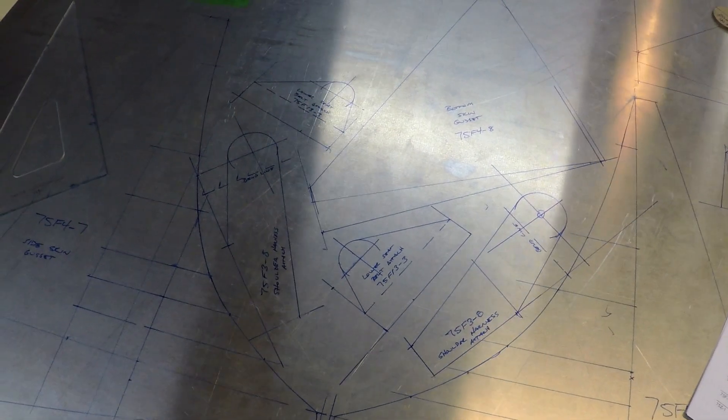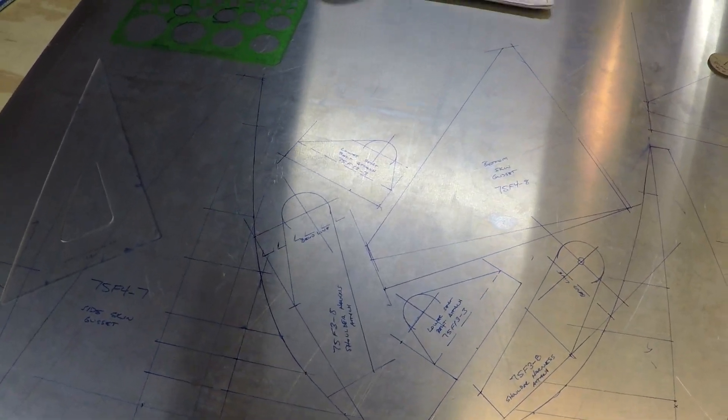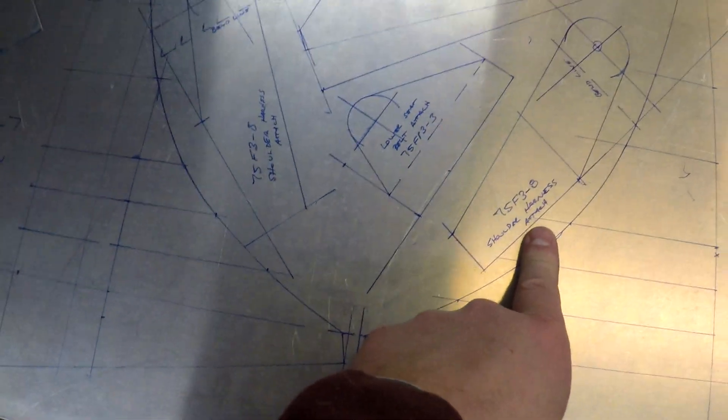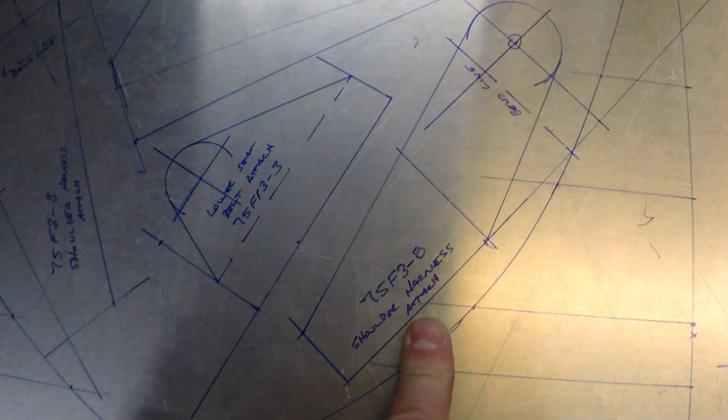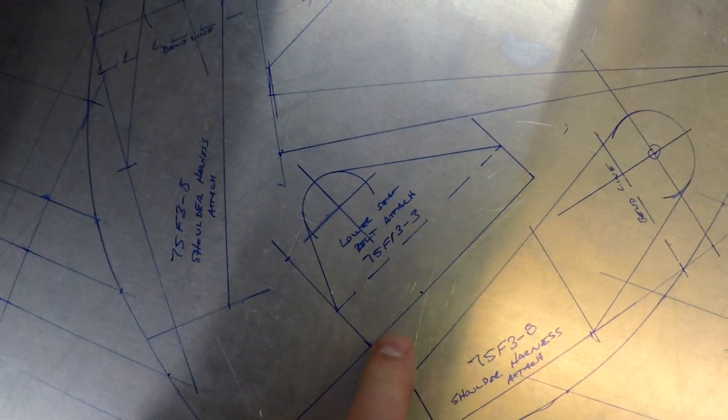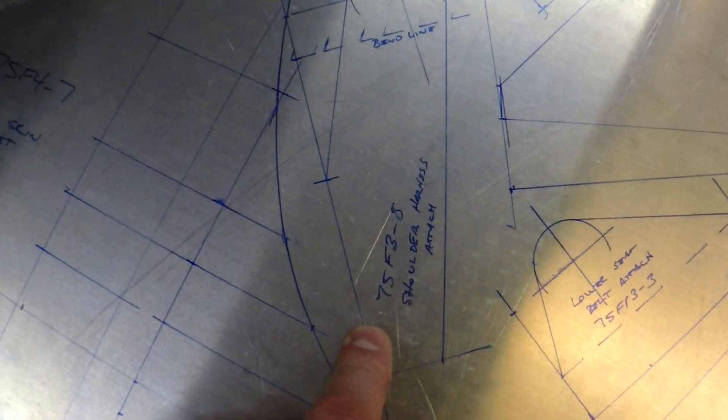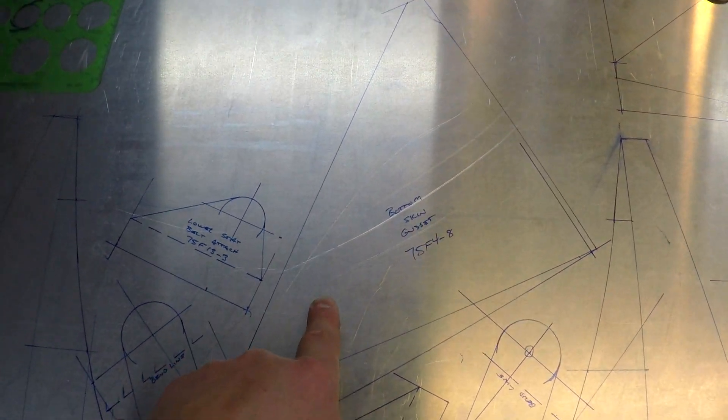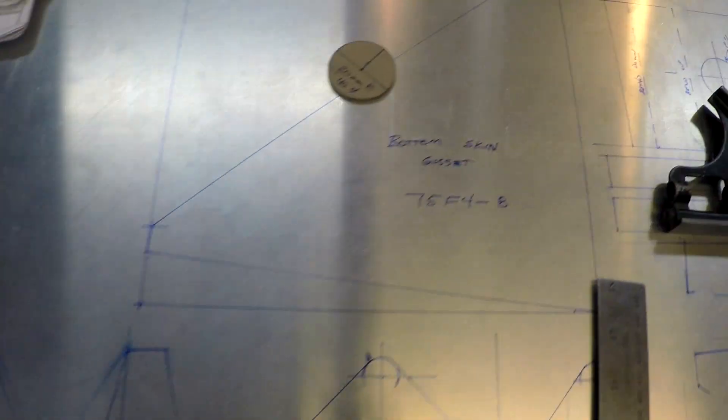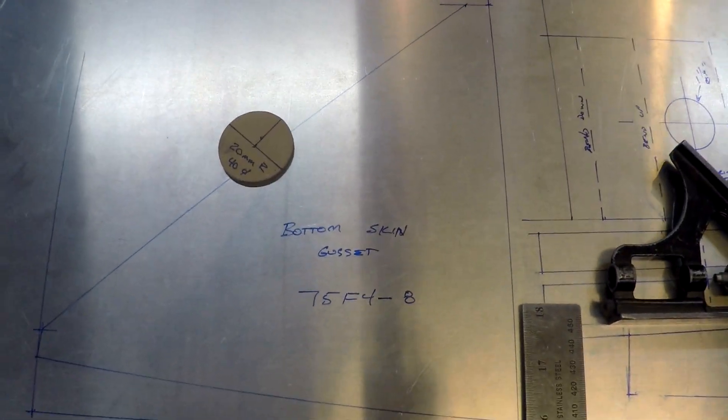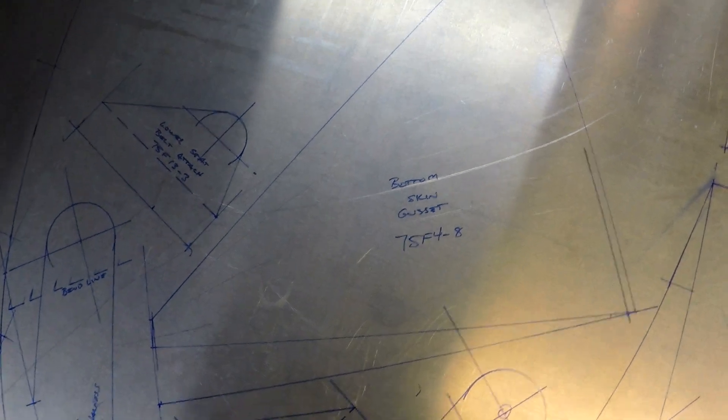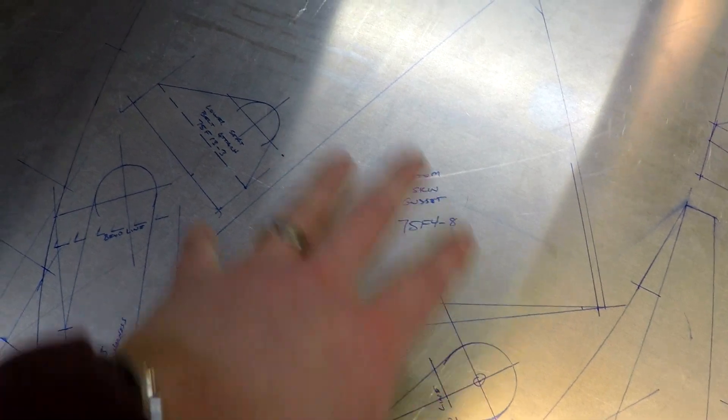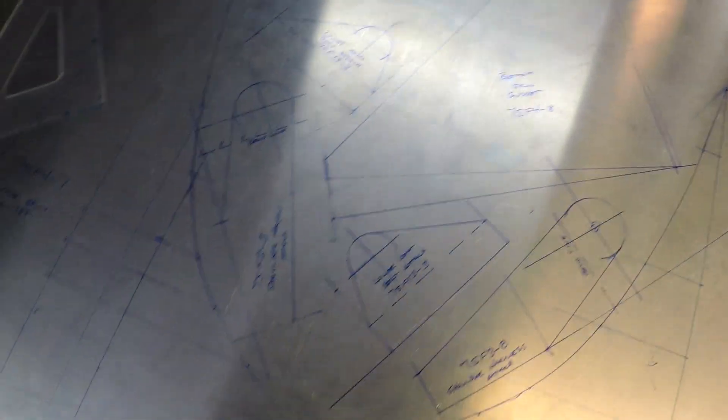Alright, so I wanted to give you just a quick final look at these kind of randomly located parts here. So we talked about the one shoulder harness attach point that just kind of randomly fell into there. I did the same thing with the lower seat belt attach, the other shoulder harness attach, the other lower seat belt attach, and one of the bottom skin gussets. So that's kind of a mirror, or not a mirror image, but just a duplicate part of this thing up here. I just crammed it into the space in there using just a bare reference line, using the triangles to lay out my angles and everything, and that turned out pretty well.